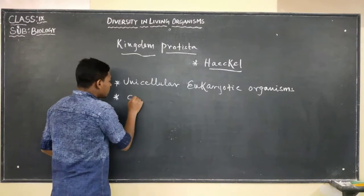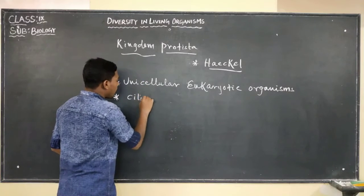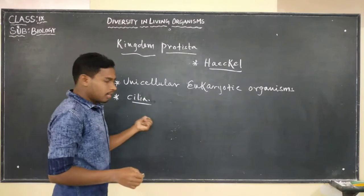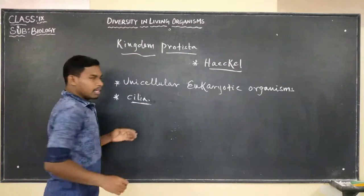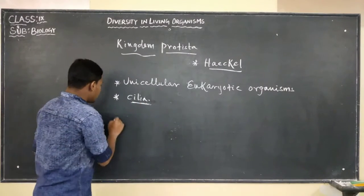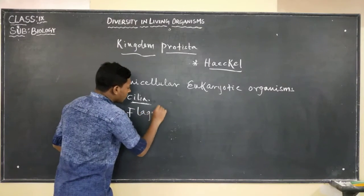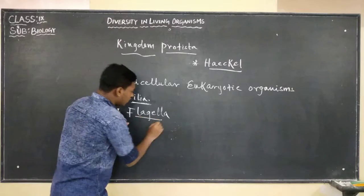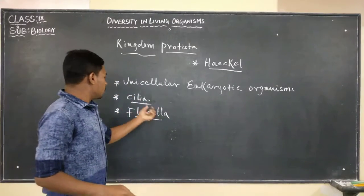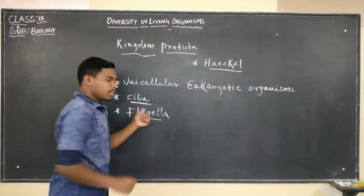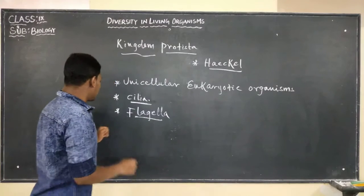Some organisms use cilia for their movement, and some organisms use a whip-like structure known as flagella. In a later part of this class, we will discuss in detail which organisms use cilia and which organisms use flagella for their movement.